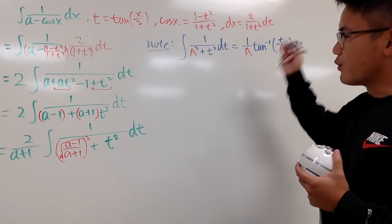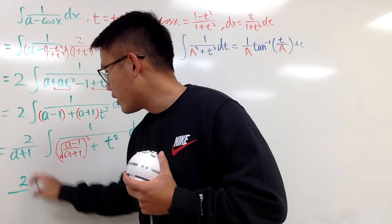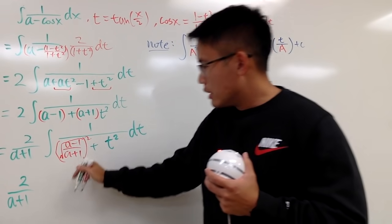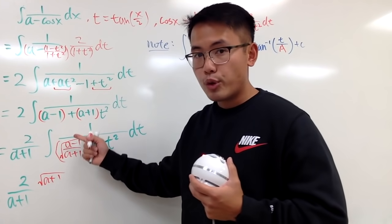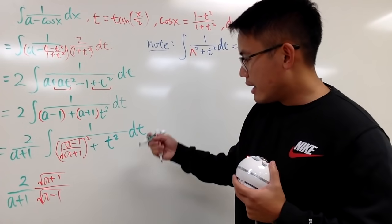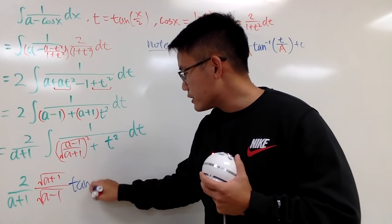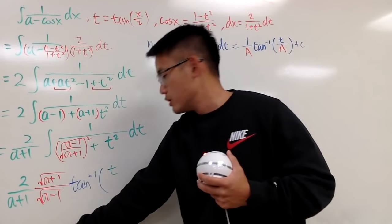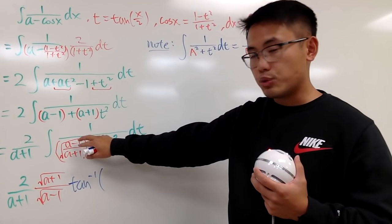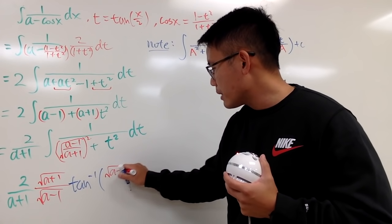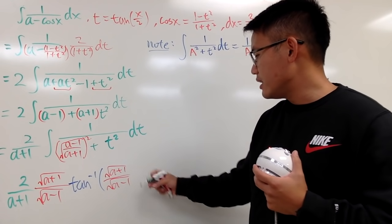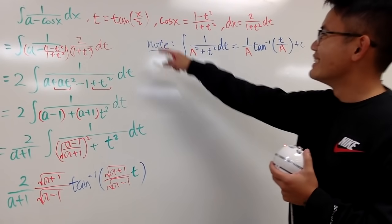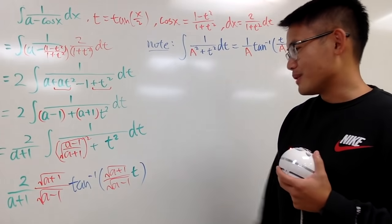Now applying the arctan formula, we get 2/(a + 1) times (1 over √[(a-1)/(a+1)]) times arctan(t divided by √[(a-1)/(a+1)]). Simplifying the reciprocal of √[(a-1)/(a+1)] gives √(a+1)/√(a-1). So the result is 2/(a+1) · √(a+1)/√(a-1) · arctan(t · √(a+1)/√(a-1)), where t is still the only variable.